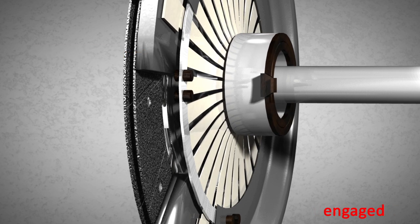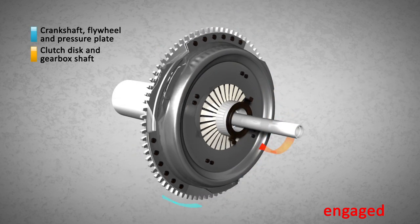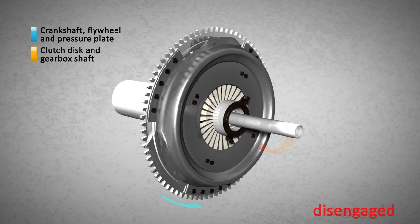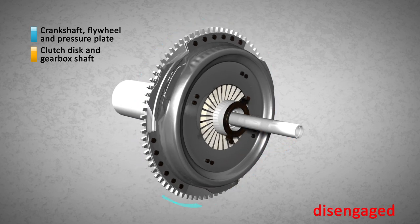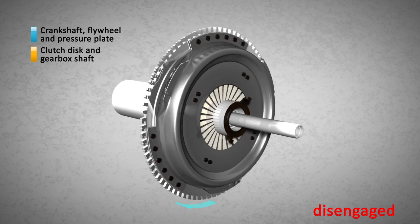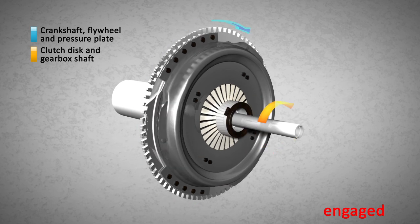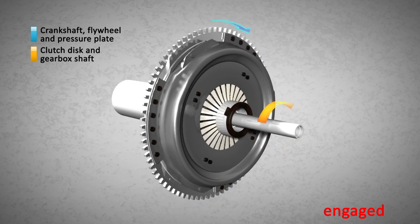So, the clutch disc can be locked between the flywheel and the pressure plate when the release bearing is released, and it can be released when the bearing is pushed into the diaphragm spring. The mechanical energy produced by the engine is transmitted to the gearbox when the clutch release bearing is released and the clutch disc is engaged.